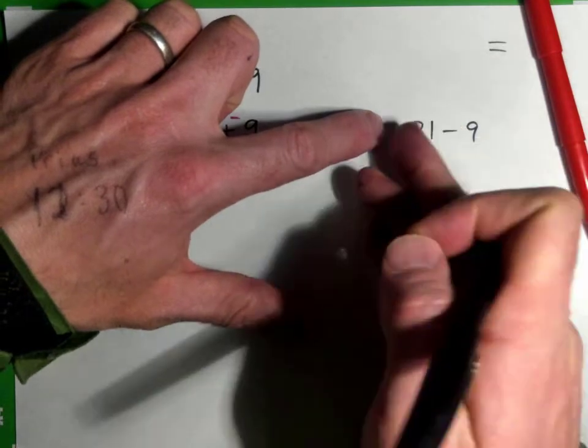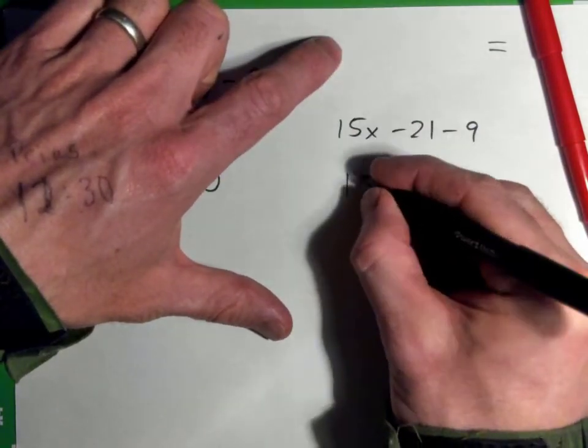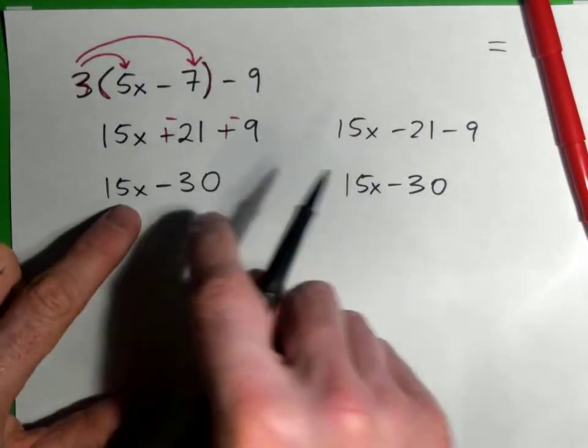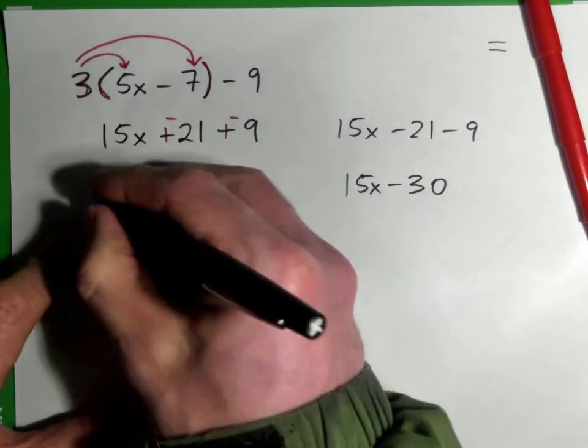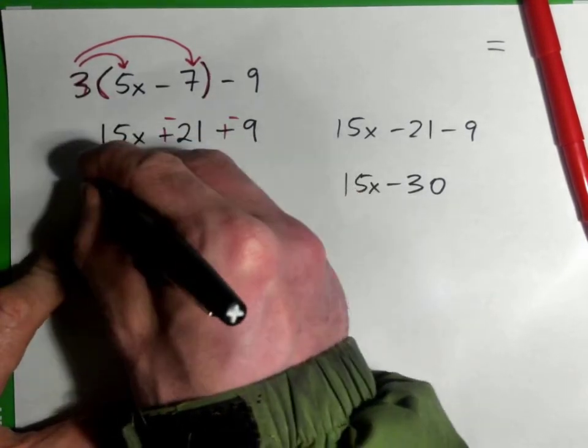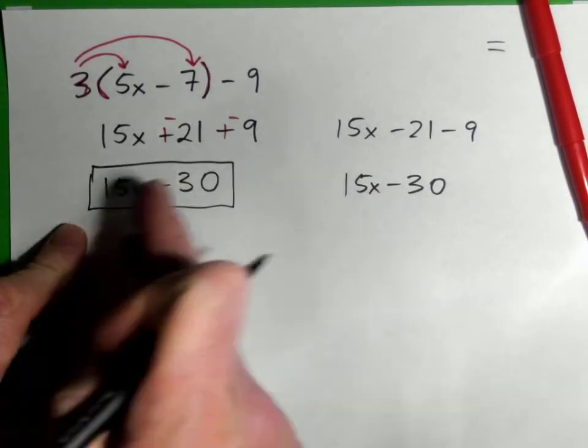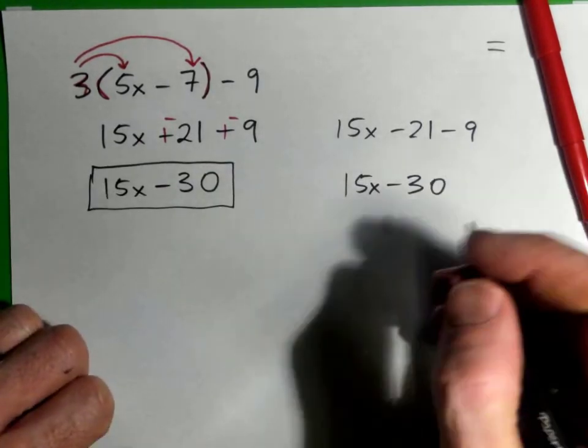But in any case, you don't have like terms at this point, so your final answer is simply 15x minus 30. These are not like terms, so you cannot combine them. Perfect.